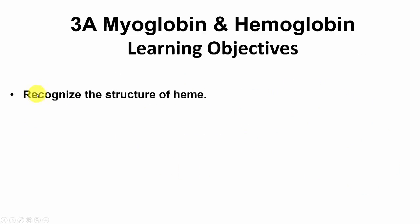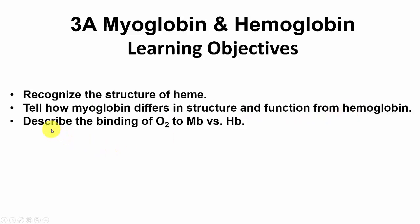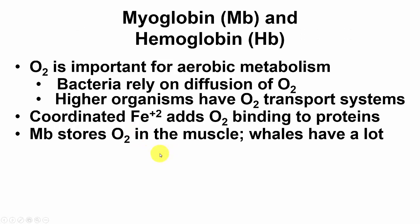Our learning objectives are to: recognize the structure of heme; tell how myoglobin differs in structure and function from hemoglobin; describe the binding of O2 to myoglobin as compared to hemoglobin; and tell how O2 binding changes hemoglobin structure.